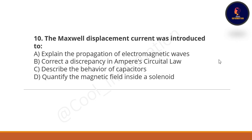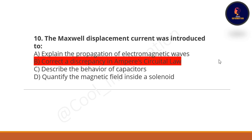Tenth question: Maxwell's displacement current was introduced to do what? Option A: explain the propagation of electromagnetic waves. Option B: correct a discrepancy in Ampere's circuital law. Option C: describe the behavior of capacitors. Option D: quantify the magnetic field inside a solenoid. The correct option is B — to correct a discrepancy in Ampere's circuital law.